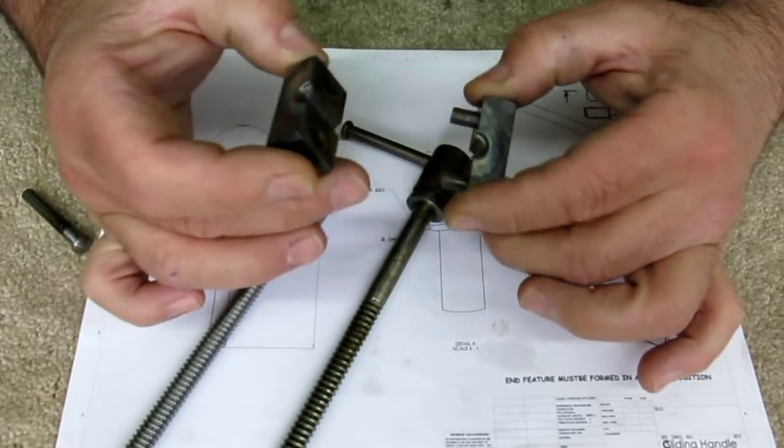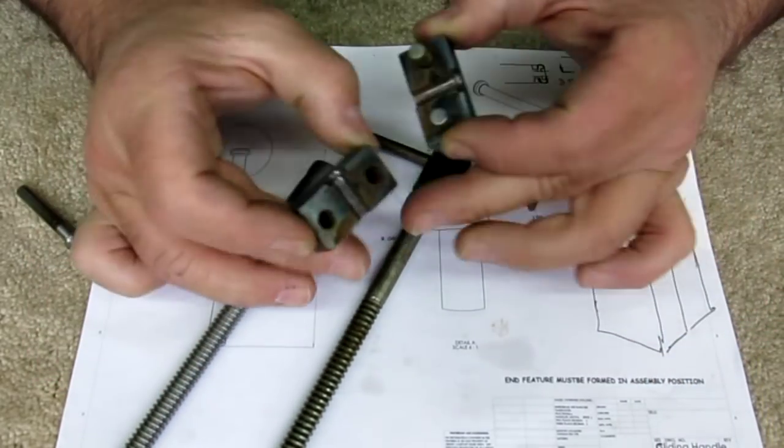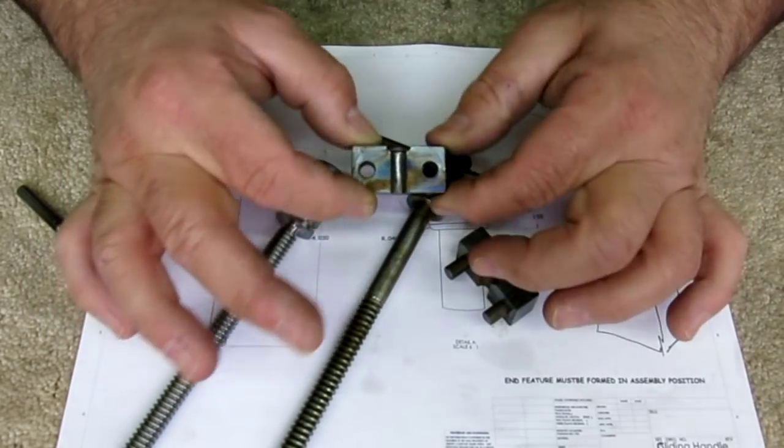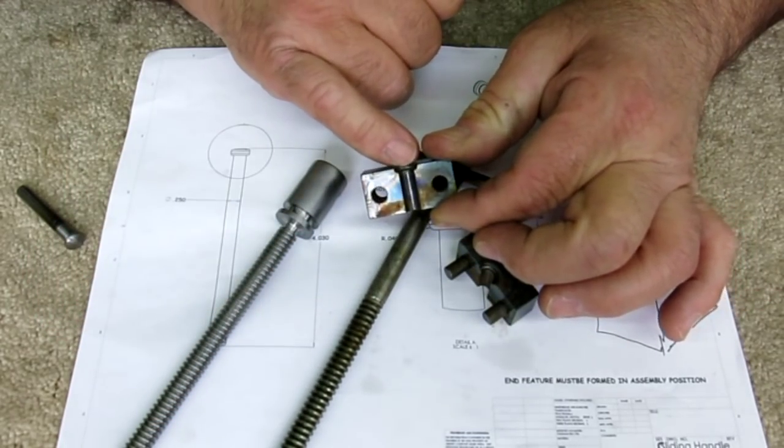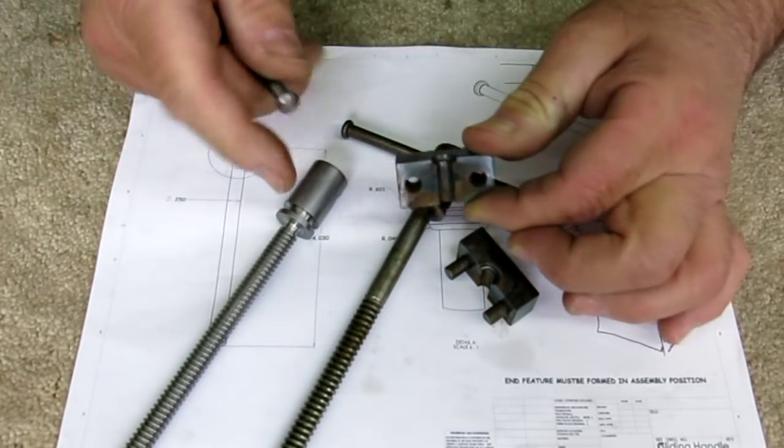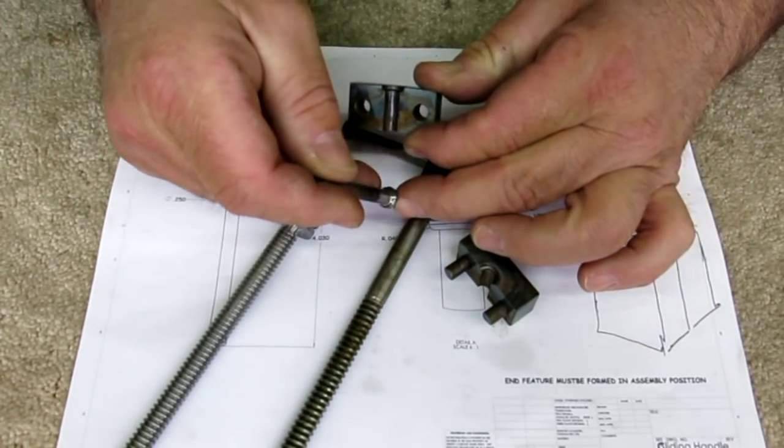So it's basically a clamp with a little pocket at one end that has a little radius on the inside edge.